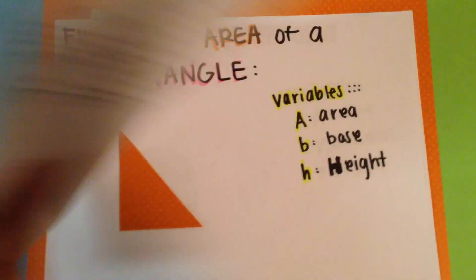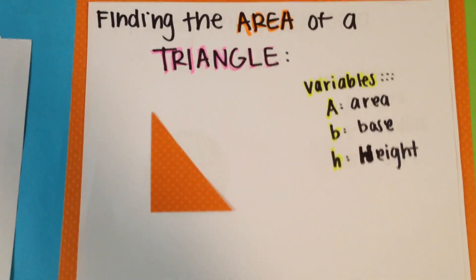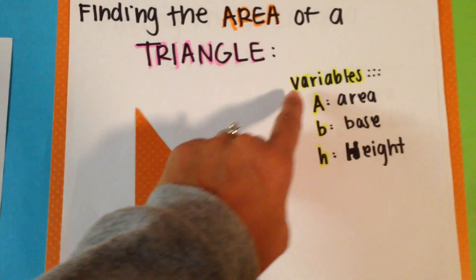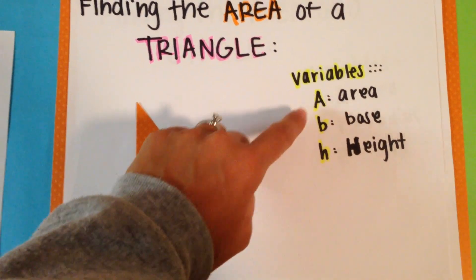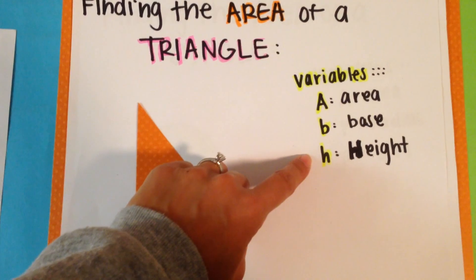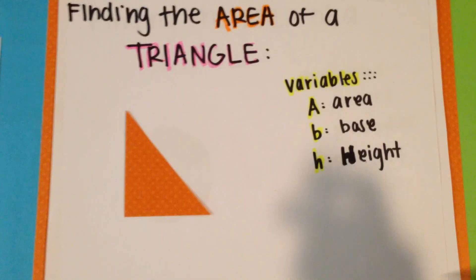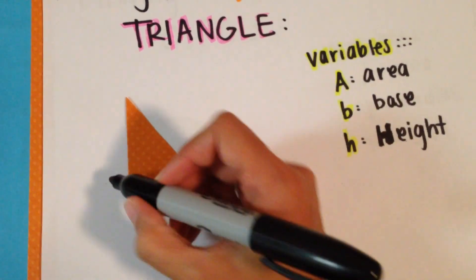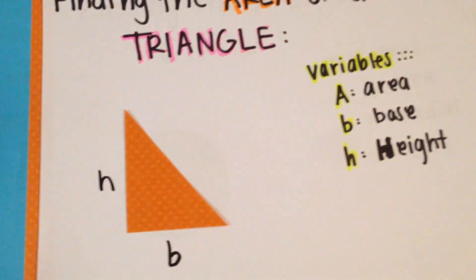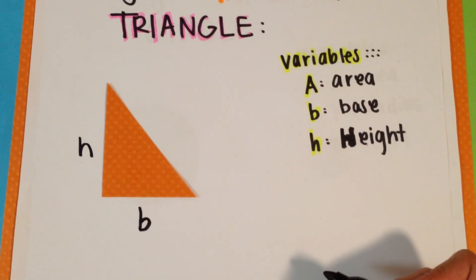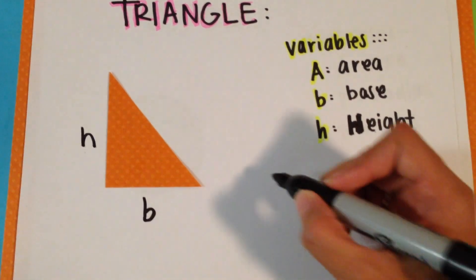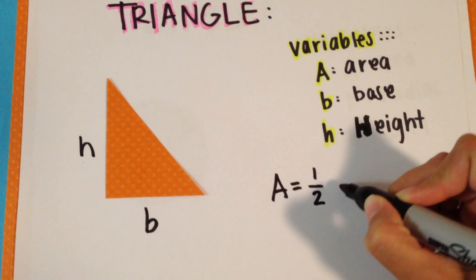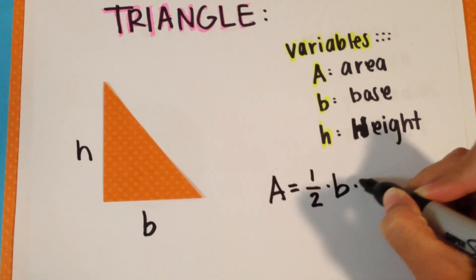Now let's find the area of a triangle. We have our triangle. The variables that we need for our triangle are area, base, and height. We label our triangle with base being at the bottom, for B, and height being how high or tall our triangle is. We find the area of our triangle by 1 half times base times height.